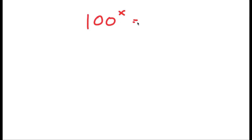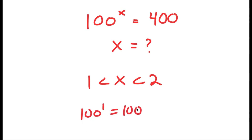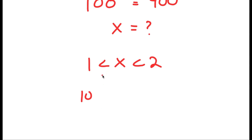In this video, I'm going to solve an interesting exponential equation. My equation is 100 to the power of x is equal to 400, and I want to find the value of x. We can see that x is going to be in between 1 and 2, because 100 to the power of 1 is 100 and 100 to the power of 2 is 10,000. So it's going to be closer to 1 than 2, but somewhere in the range of 1 and 2.